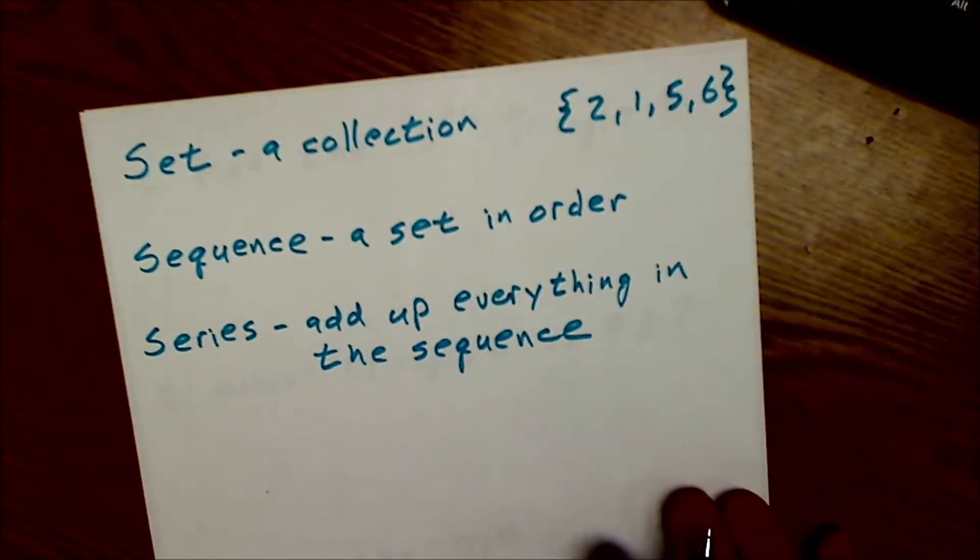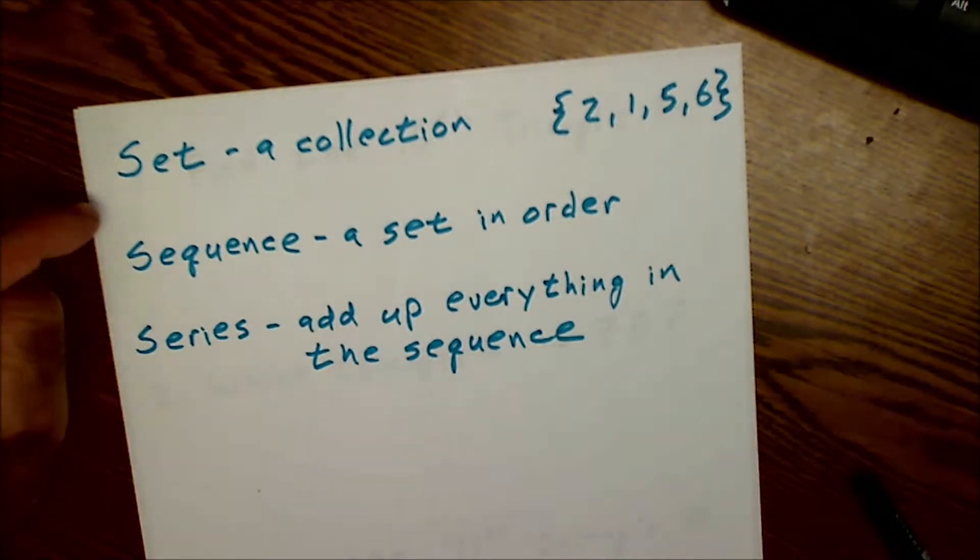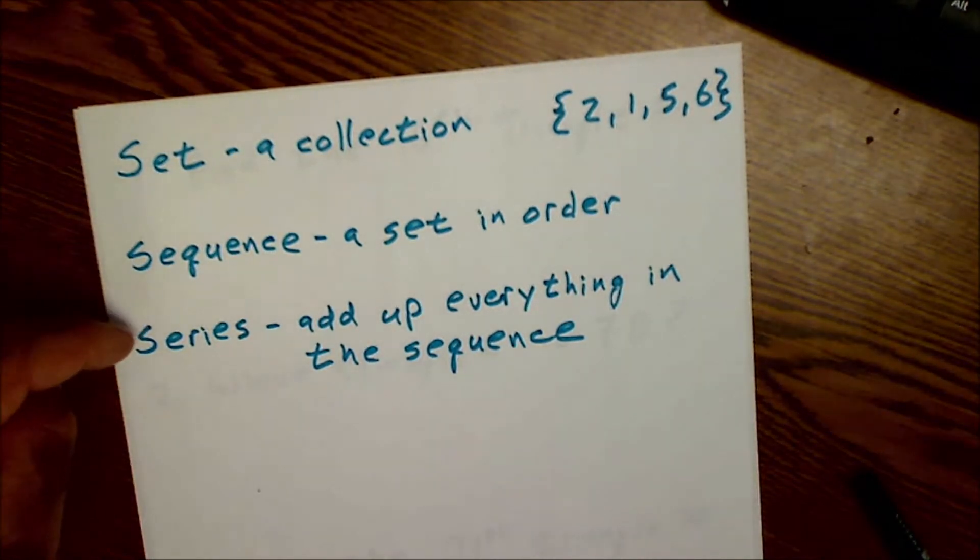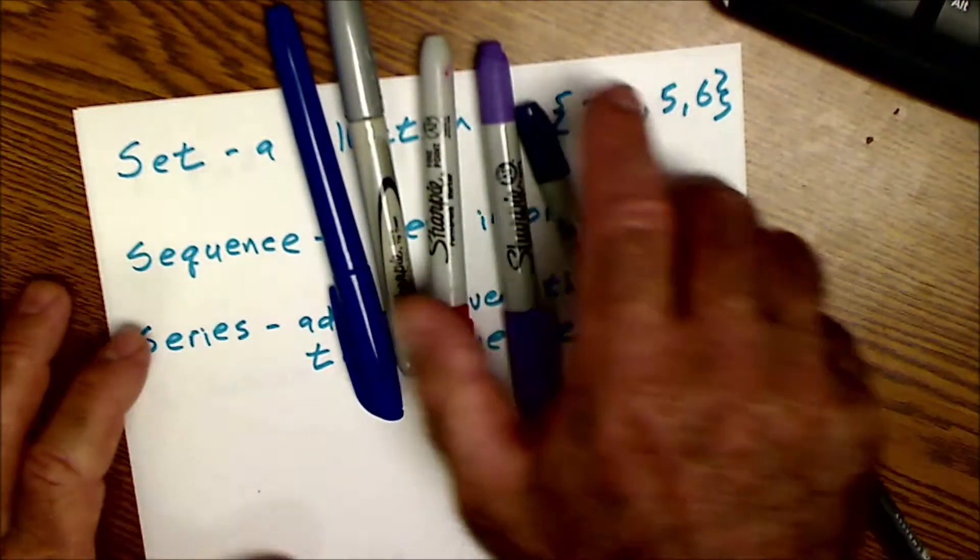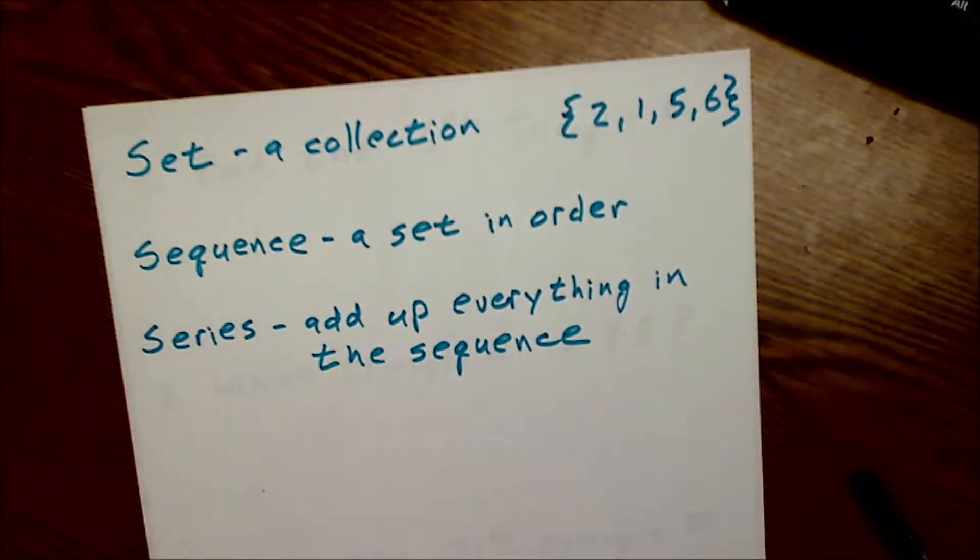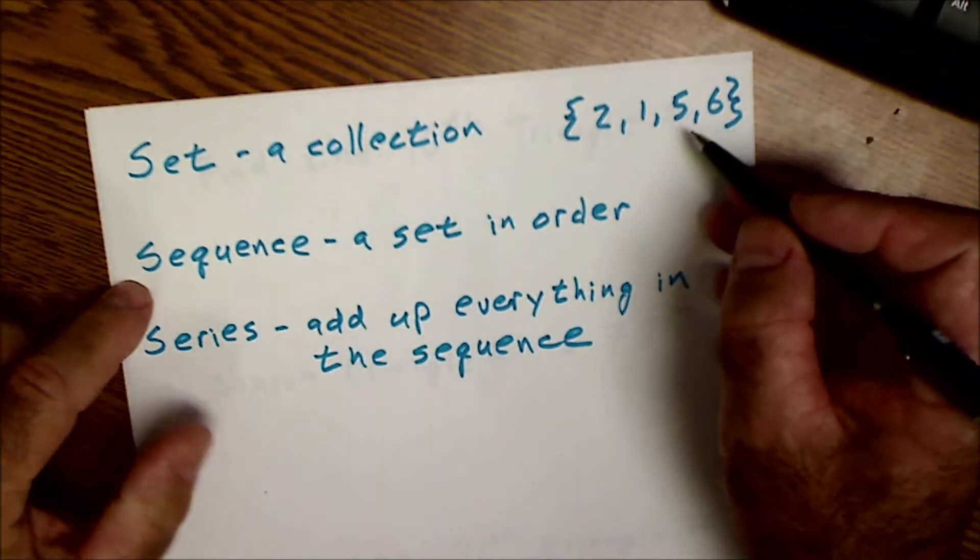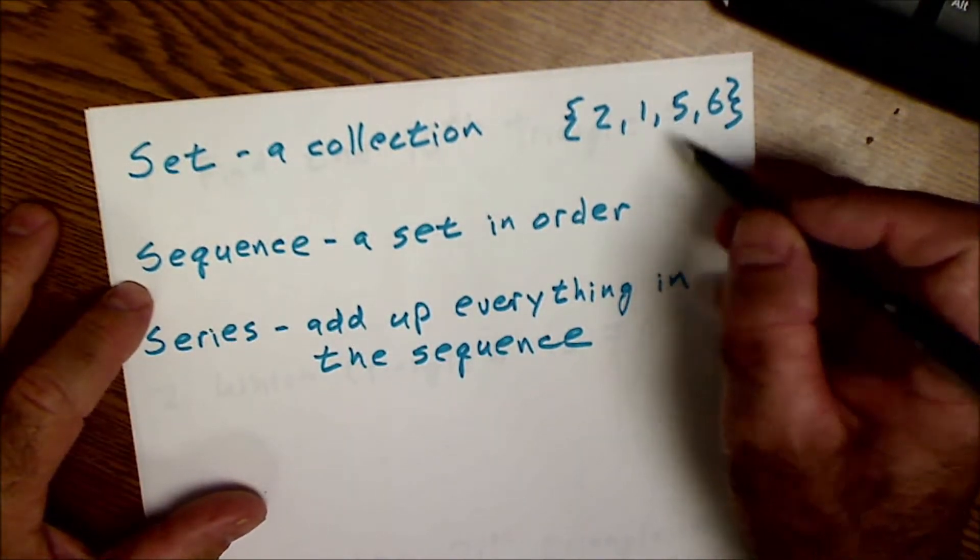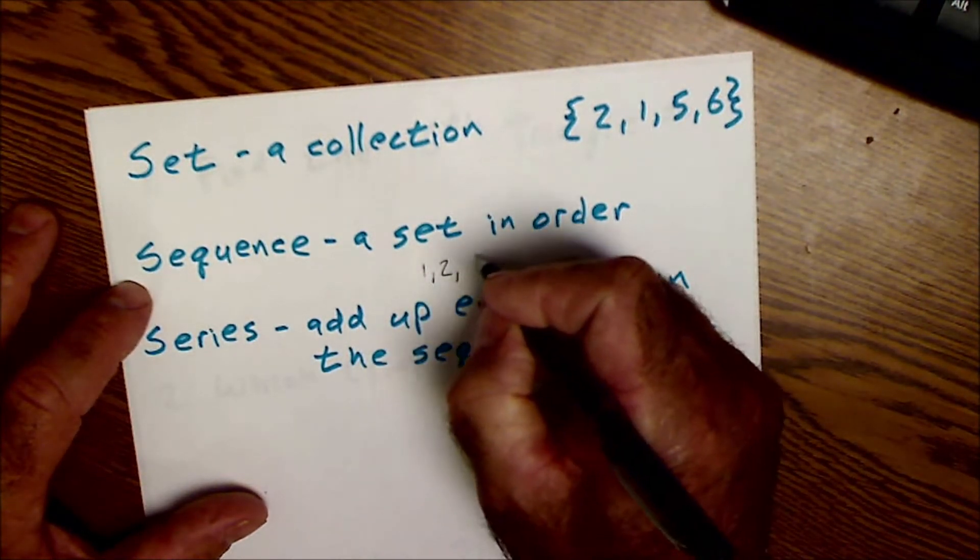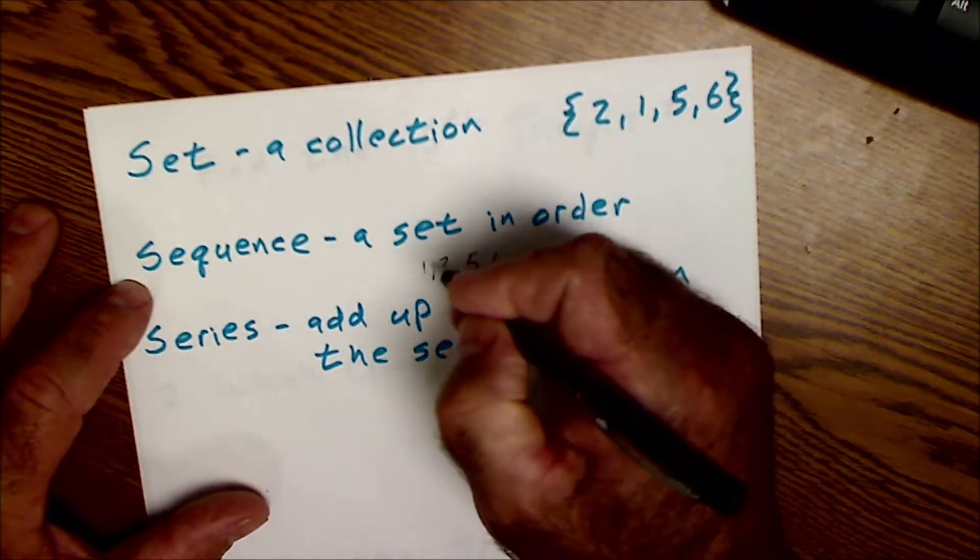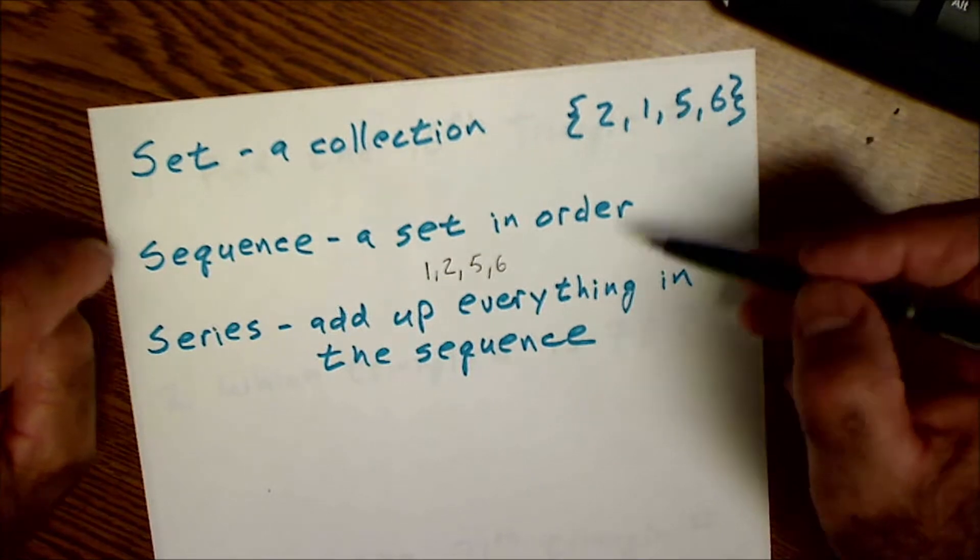First there's really three things in sequences and series. The first one is a set, and a set is really just a collection like a collection of pens or collection of numbers. There's no order involved, it could just be a collection say 2, 1, 5, 6. A sequence now takes that collection and orders it. So now a sequence would be something like 1, 2, 5, 6. So the only difference between a sequence and a set is it takes that set and puts it in order.